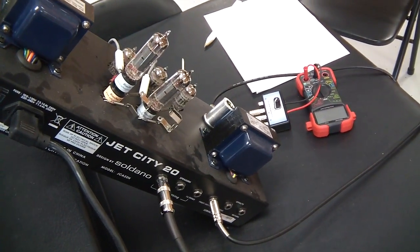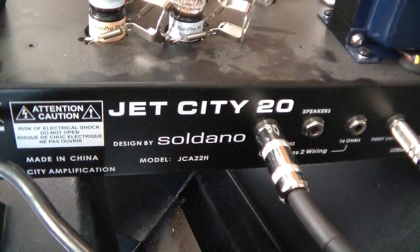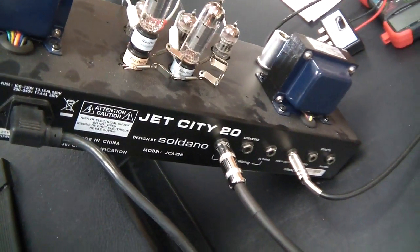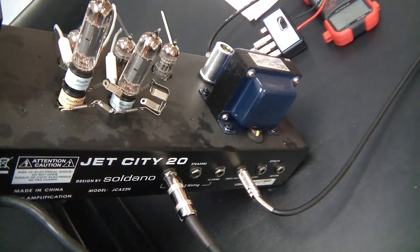Hey guys, we're going to look at how to set the bias on a Jet City amplifier. This is the JCA22H and there's already a very good video out there on how to do it with just a multimeter